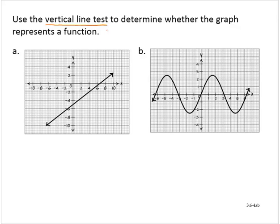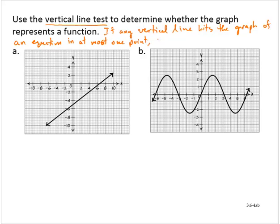The vertical line test says if any vertical line hits the graph of an equation in at most one point, then the equation is that of a function.